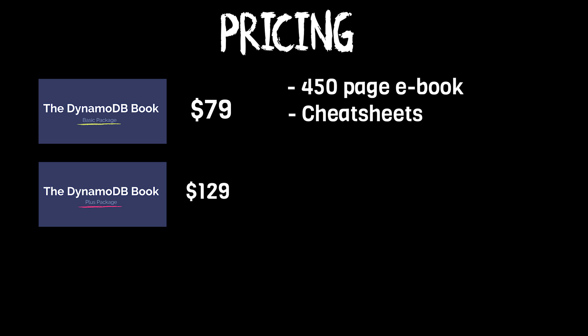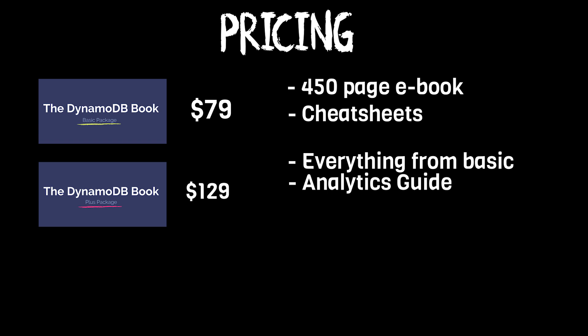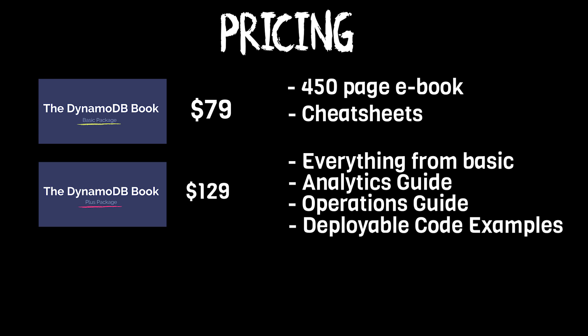The plus package is $129 and includes everything from the basic package with three key additions. First is the analytic supplement guide, which is useful for those looking to integrate DynamoDB tables with other AWS analytics services such as Redshift, AWS Glue, and Athena, and how to use DynamoDB streams. Second is an operations supplement guide, which talks about how to actually operate production systems using Dynamo — there's a ton of good material here and I highly suggest you consider the plus package for this piece of content alone. Third is deployable code examples, which includes the code from the five main examples discussed in the book, all deployable using AWS CloudFormation.